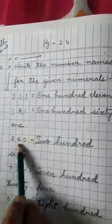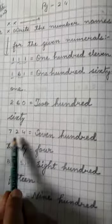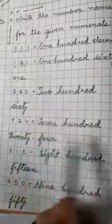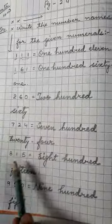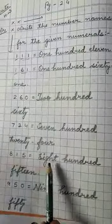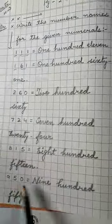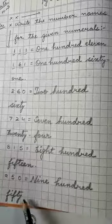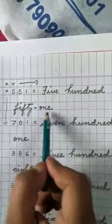Now next you see 260, 260. Next is 724, 724. 815, 815. Here you see 815 written. 950, 950. 551. So answer is 551.